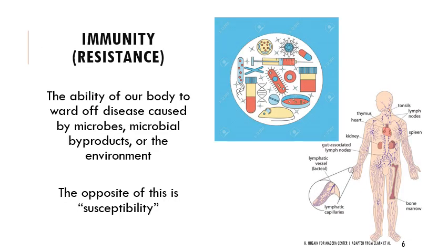When we talk about immunity, we're talking about this complex system throughout our body that provides us some level of resistance — basically the ability to get rid of disease, stop it from happening, or stop us from getting sick from foreign invaders. These are caused by microbes, microbial byproducts, or the environment. The concept of self versus non-self is really important: if we're not able to recognize a foreign invader, we can end up attacking our own cells or responding disproportionately.